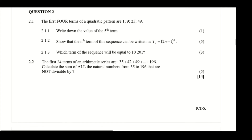Now we are on question 2. The first part, question 2.1.1, asks us to find the fifth term. The quadratic pattern has four terms: 1, 9, 25, and 49. We need to find the next term, so we write out the sequence: 1, 9, 25, 49, and then we don't know the next term.